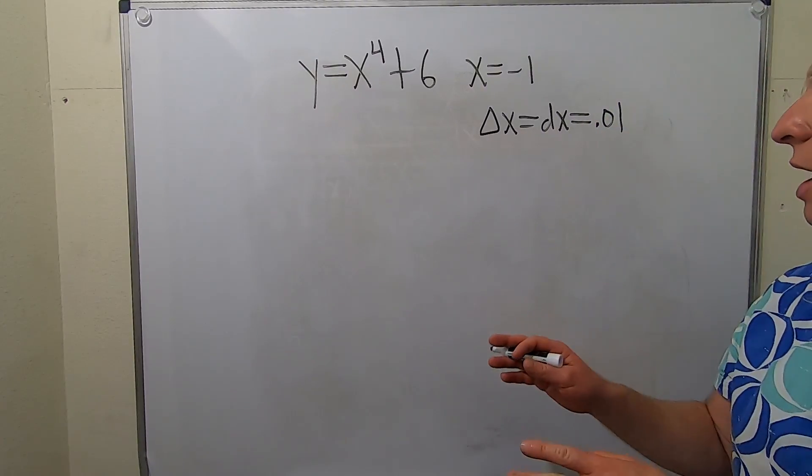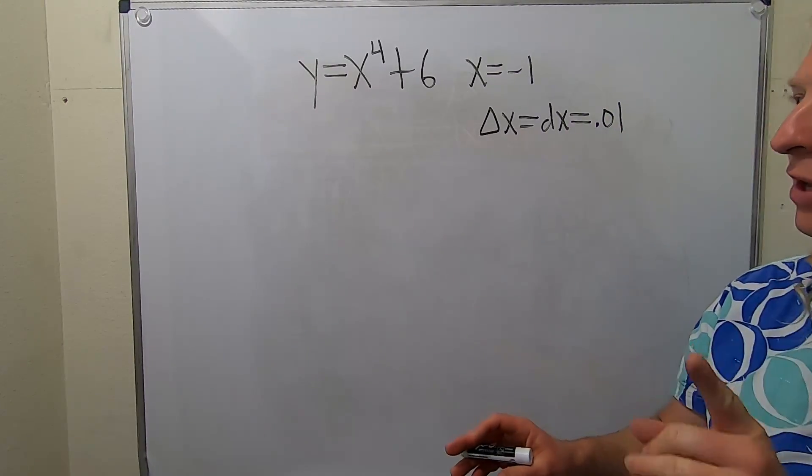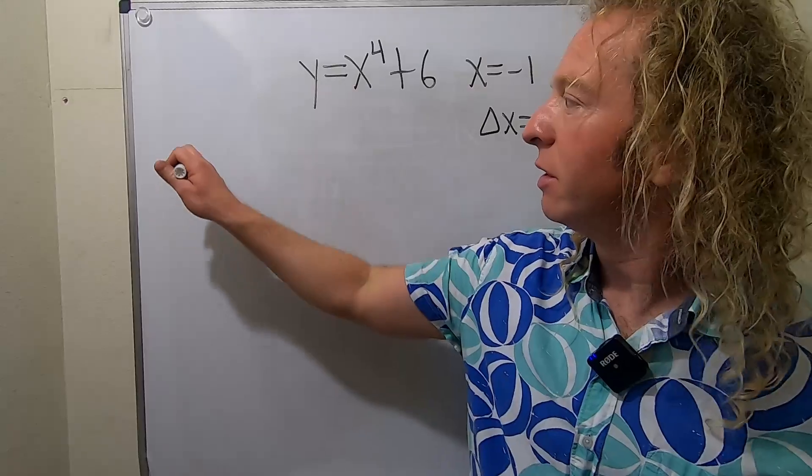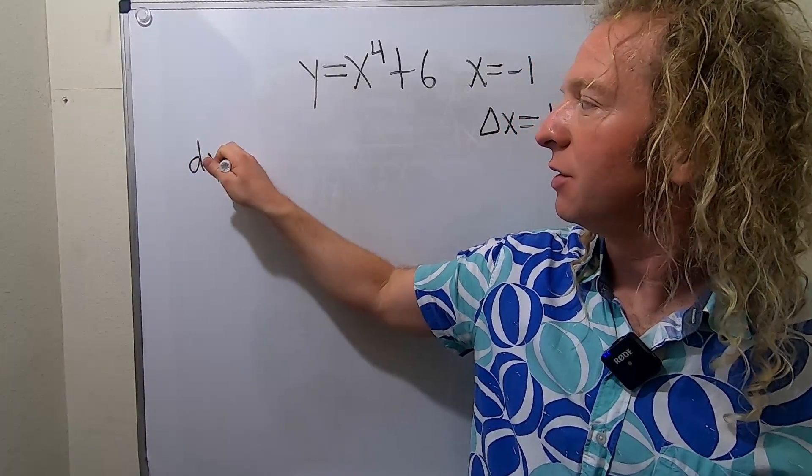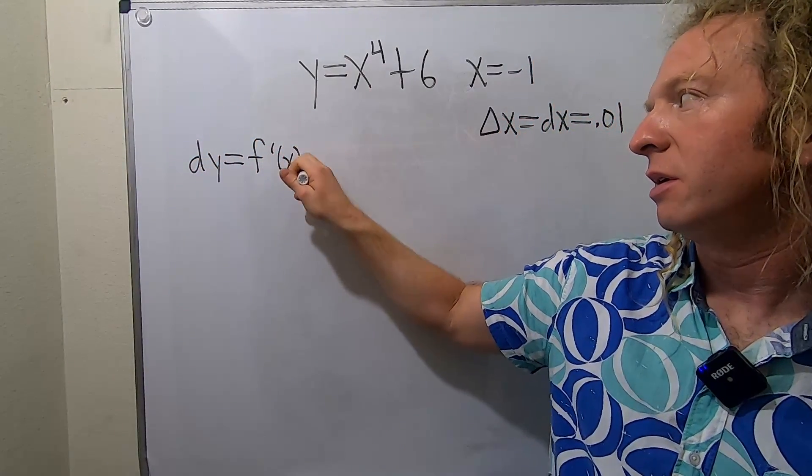In this video, we're going to compute dy and delta y. Let me give you the formulas. dy is equal to f prime of x dx.